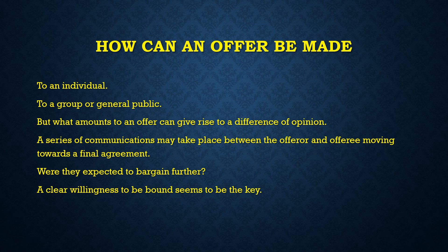So how can an offer be made? It can be made to an individual, to a group, or to the general public — for example, a reward for information for finding and returning a dog. It may be written, spoken, or implied by conduct. What amounts to an offer can give rise to a difference of opinion. A series of communications may take place during a bargaining process between the offeror and the offeree as they move towards a final agreement, making it difficult to pinpoint exactly whether a specific statement was an offer or only part of continuing negotiations between the parties.